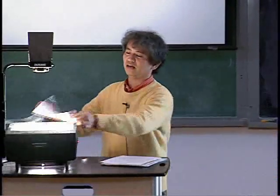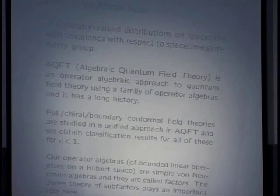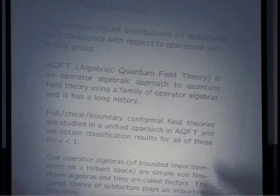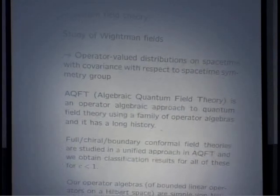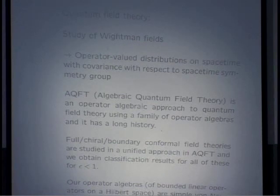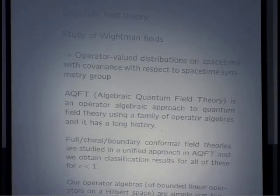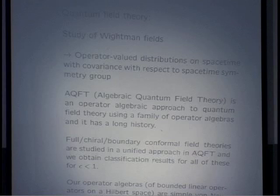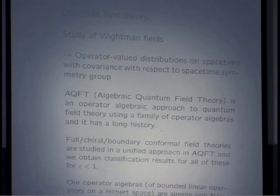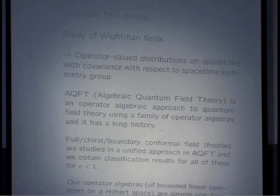Since I'm the only one giving this kind of talk on Operator Algebras here, I start with something very basic, known for about 30 to 40 years. Mathematically speaking, a quantum field is a certain operator-valued distribution — the Wightman field — on the spacetime with natural covariance of certain spacetime symmetry groups. The operator algebraic approach is called Algebraic Quantum Field Theory, traditionally abbreviated as AQFT, and it is based on algebras of bounded linear operators.